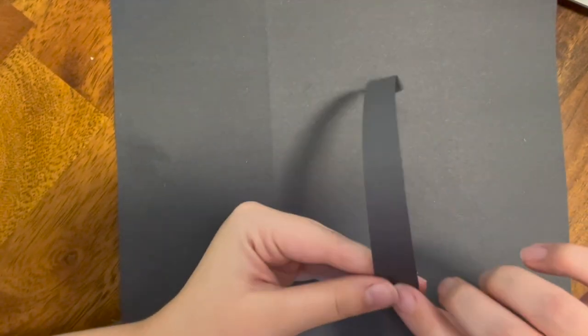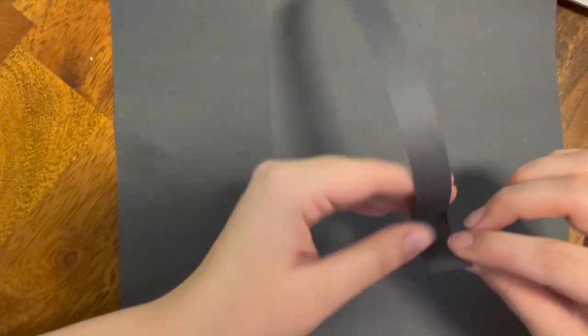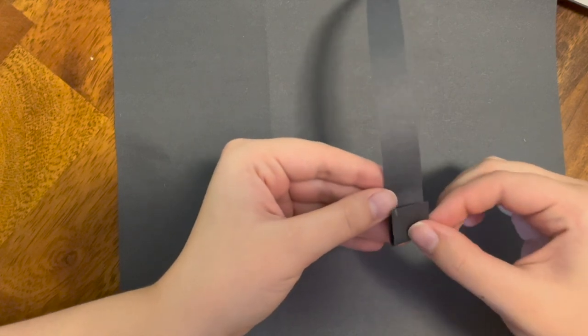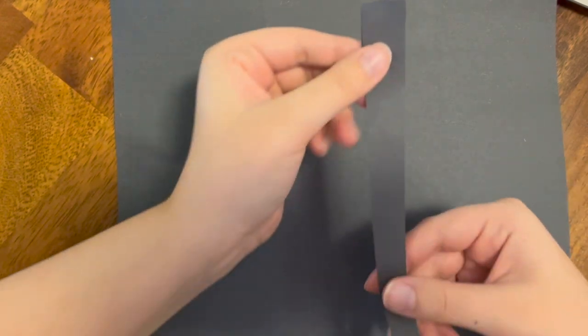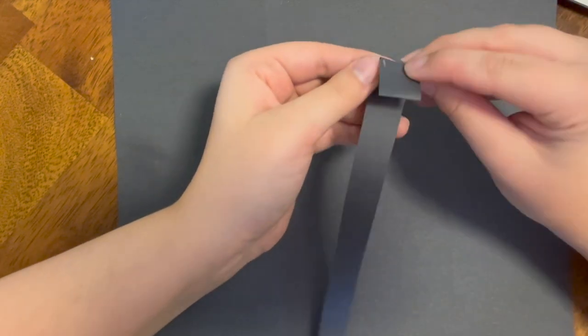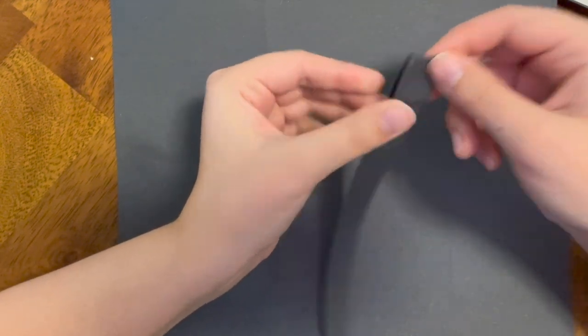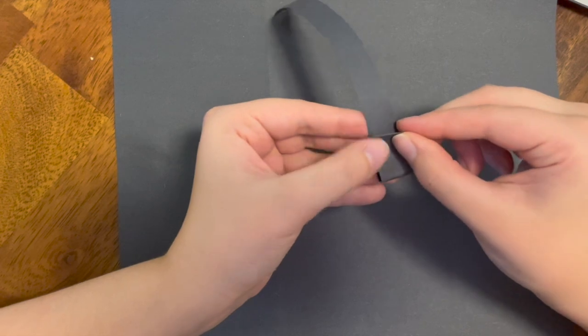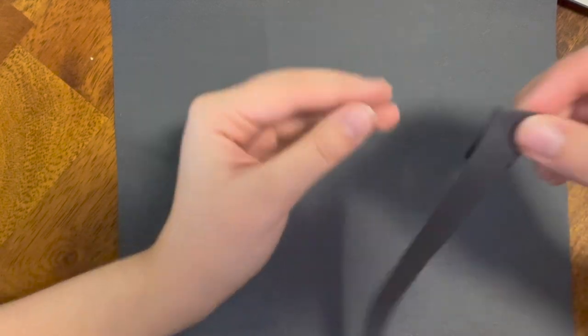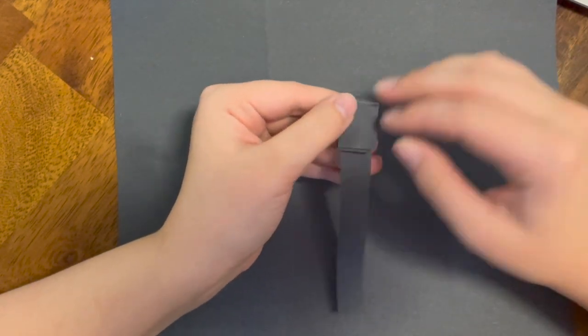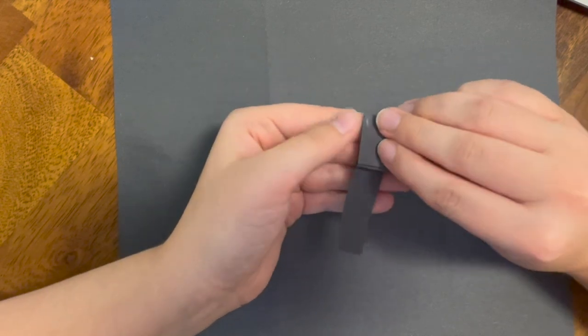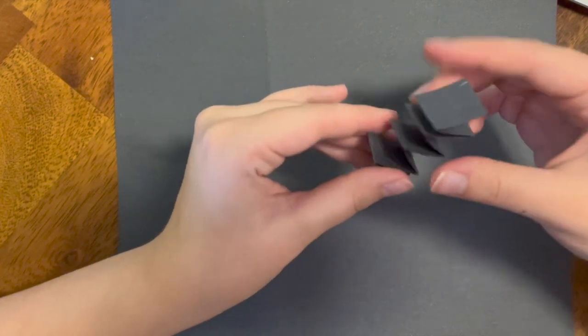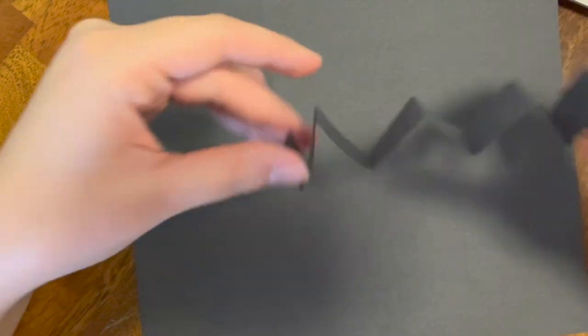Once it is cut out we are going to fold it to create the shape of a spider's legs. You're going to fold up like so. Flip your paper over and fold down. Flip your paper over and fold up. Flip your paper over and fold down. Continue this all the way to the bottom of the strip of paper. Once it's complete it should look something like this. It'll have folds in it to make the spider's leg.